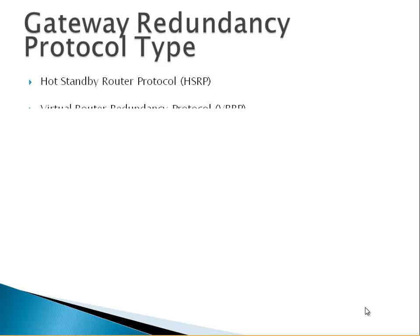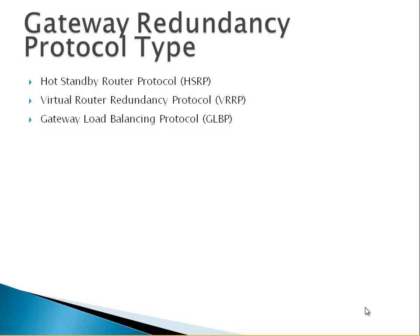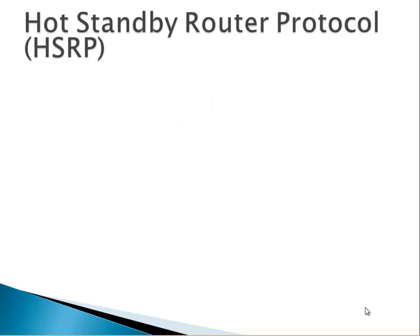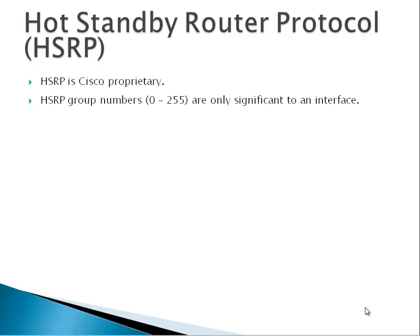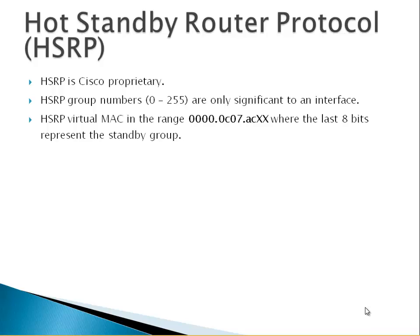Gateway redundancy protocol types: we have three types — Hot Standby Routing Protocol (HSRP), Virtual Router Redundancy Protocol (VRRP), and GLBP. HSRP is a Cisco proprietary protocol. HSRP group numbers can range from 0 to 255 and are only significant to the interface. The HSRP virtual MAC address is in the range 0000.0C07.AC followed by the group number — for example group 1 is 0x01, group 2 is 0x02, and so on, where the last 8 bits represent the standby group.